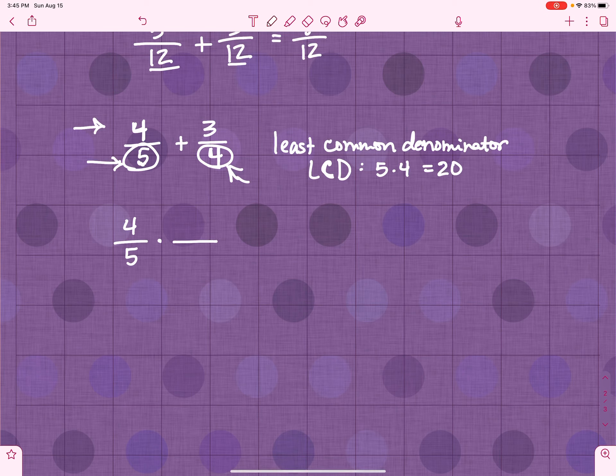I know I need a denominator of 20. But, whatever I do to the denominator, I'm going to also have to do to the numerator. So, I'm going to have to multiply the numerator and the denominator by 4. Let me explain to you why this is true.